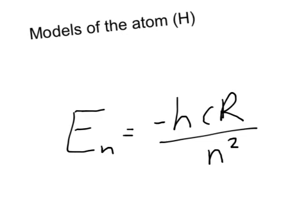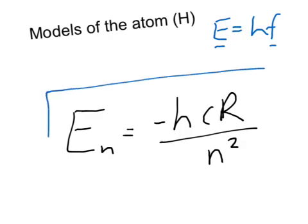Now it works out that if you use that previous formula from the Balmer series and the Lyman series, you combine it with E equals HF as the energy related to the frequency of a wave, you can substitute that in and you end up with this formula here.